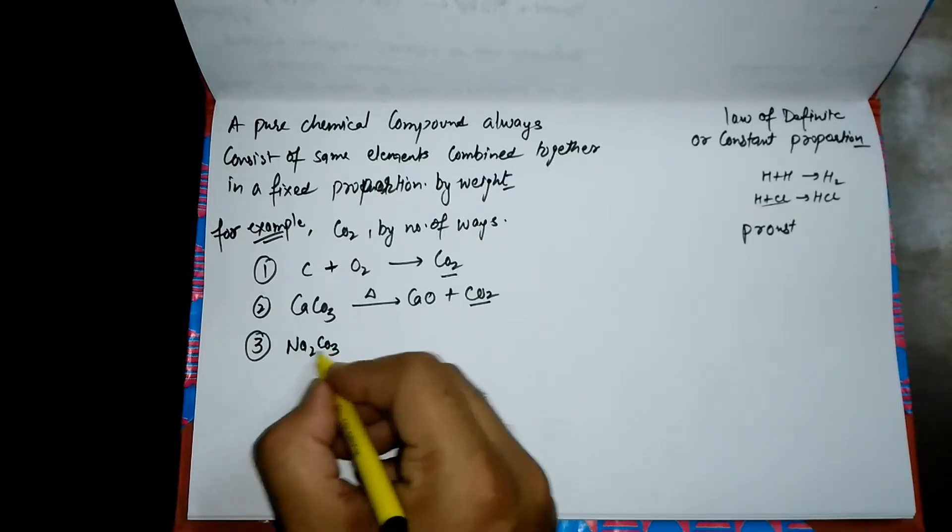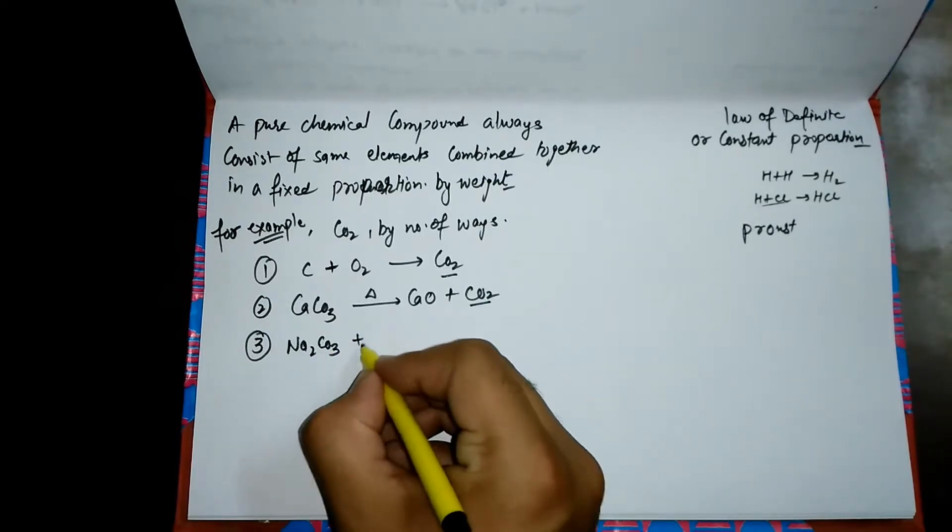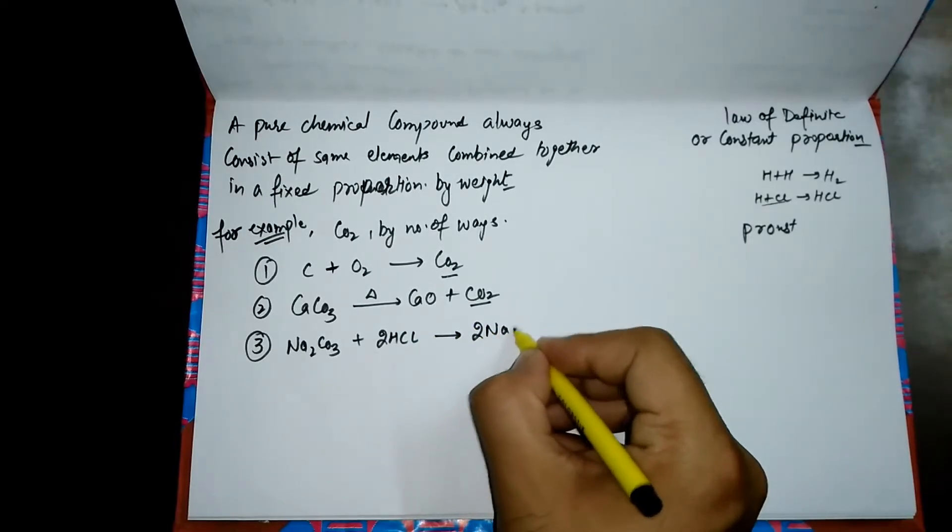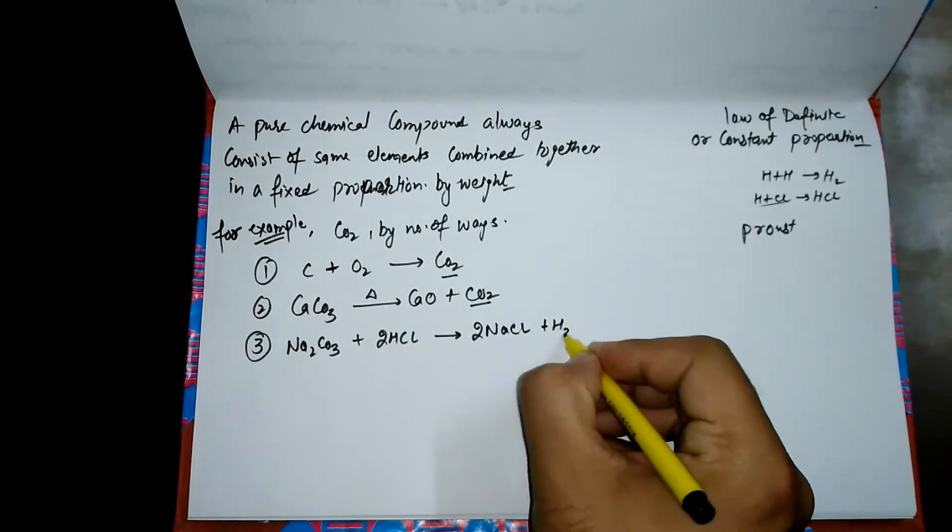The third method: when we mix washing soda or sodium carbonate with HCl, we form carbon dioxide.